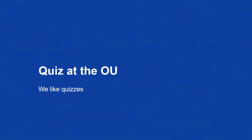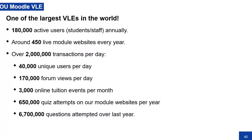We're just going to start off with some context first. The OU, we've got a lot of online modules and we like quizzes. Just to give you some stats: we've got 180,000 active users on our VLE — it's one of the biggest in the UK, probably not the world. About 450 live module websites and about 2 million transactions every single day.